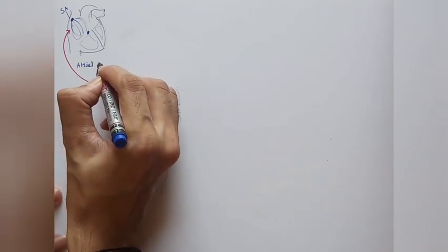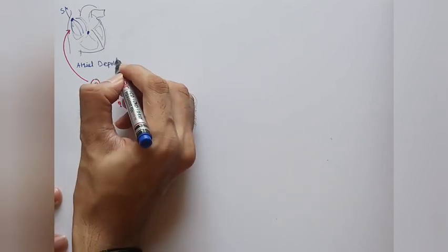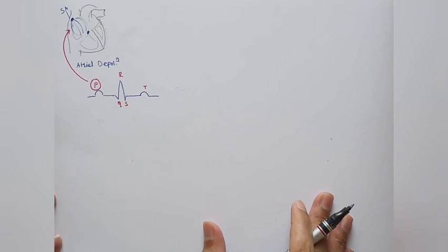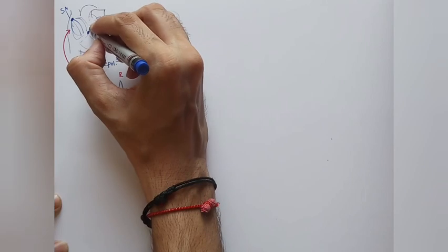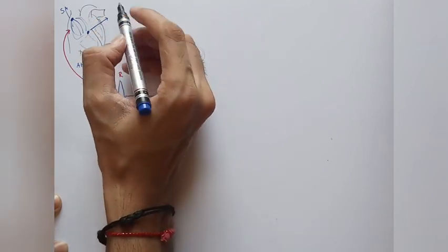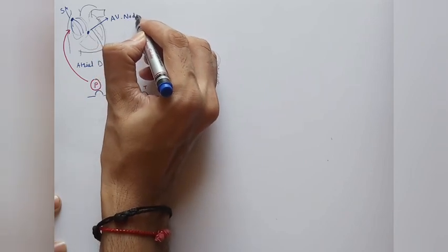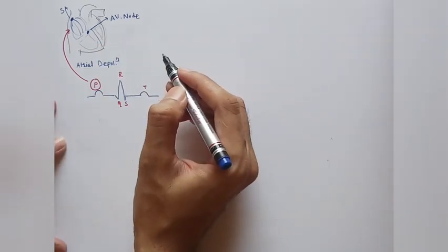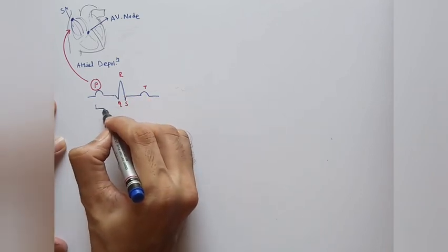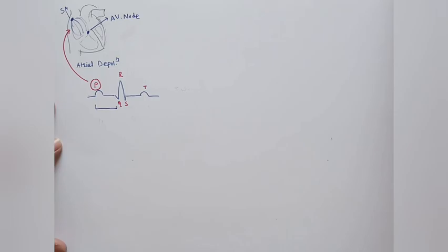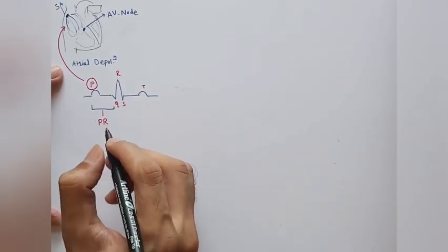The P wave represents atrial depolarization. After the electrical activity reaches the AV node — the atrioventricular node — there is a small lag of 0.1 second. This lag in electrical activity is represented by the PR interval.